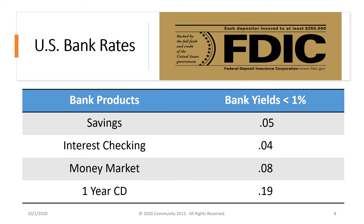U.S. bank products offer low risk but very low returns. As you can see, bank yields are less than 1%. We're looking at 0.05%, 0.04%, 0.08%, and 0.19% on a one-year CD — that's literally 5%, 4%, 8%, and 19% of 1% respectively. Interest checking rates are equally anemic. These rates do not even meet the national inflation rate. Is this a good place to put your money?